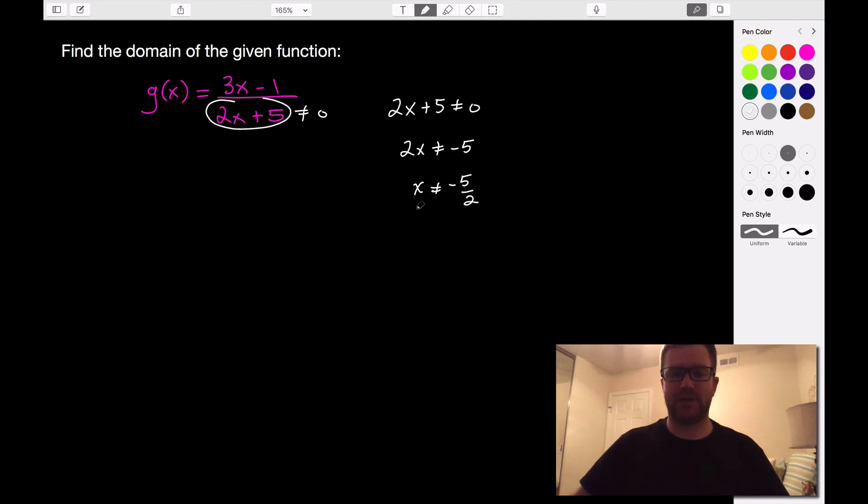So this is actually just our answer in set notation, right? So the domain in set notation would be the set of all x such that x does not equal negative 5 halves.